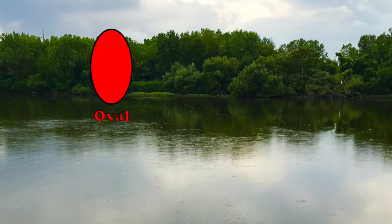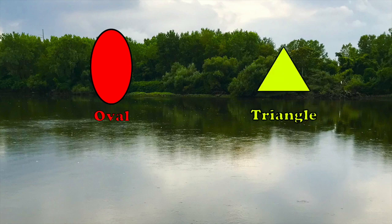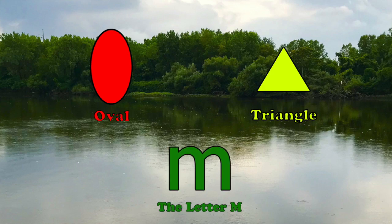The first one we're going to use is an oval. Then we're going to move on and use another shape. We're going to use a triangle. Lastly, we're going to use a letter. The letter M.